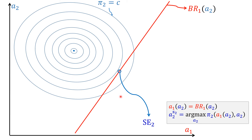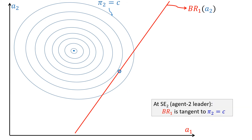In a similar manner, if we consider a Stackelberg game where Agent 2 is the leader and Agent 1 is the follower, we first take the best response of the follower, Agent 1, to Agent 2's actions. This red line is the best response of Agent 1. We then locate where the contours of equal payoff of Agent 2 are tangent to this best response of Agent 1, and this is the Stackelberg equilibrium point where Agent 2 is the leader and Agent 1 is the follower.